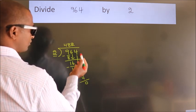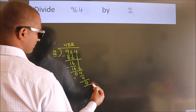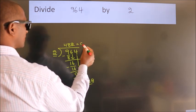After this, no more numbers to bring it down. So we stop here. This is our remainder. This is our quotient.